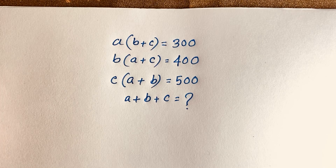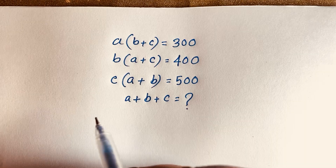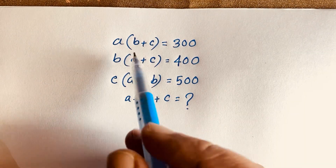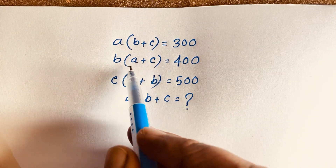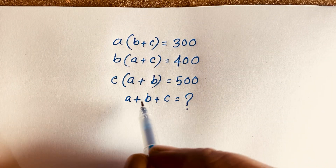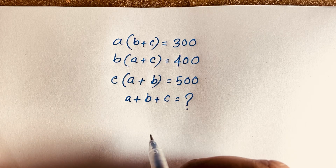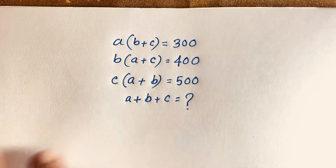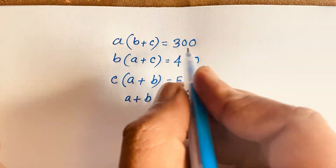Hello everyone. In this video we have solved a nice math olympiad question. The question is: a times (b+c) is equal to 300, b times (a+c) is equal to 400, c times (a+b) is equal to 500. We'll find out what is the value of a+b+c. So let's start.